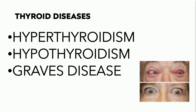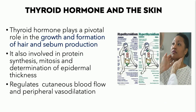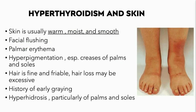Thyroid disease is another area with dermatologic manifestations, both in hyper- and hypothyroidism. Thyroid hormone plays a pivotal role in growth, hair formation, sebum production, protein synthesis, cell cycle and mitosis, epithelial changes, and peripheral blood flow and vasodilatation. In hyperthyroidism, the skin is often warm and moist, there may be facial flushing, palmar erythema, fine and friable hair, and hyperhidrosis.